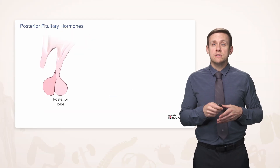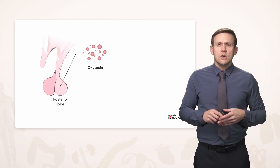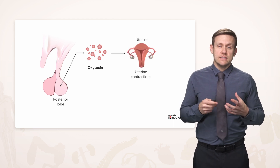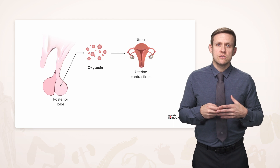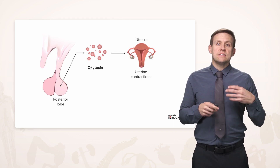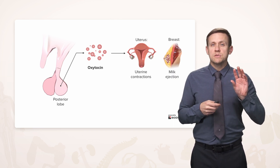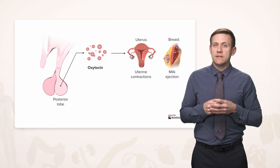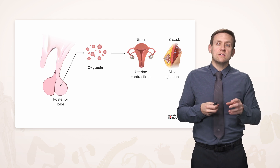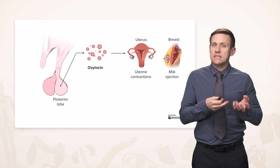Moving to the posterior pituitary, we have oxytocin, which has an effect on the uterus during contractions. This is what's going to stimulate contraction of the uterus during childbirth. It's also going to stimulate a type of modified smooth muscle cell in the breast that helps with the milk ejection reflex. So while prolactin helps stimulate production of milk, oxytocin has a role in the actual ejection of milk out through the ducts that lead into the nipple.